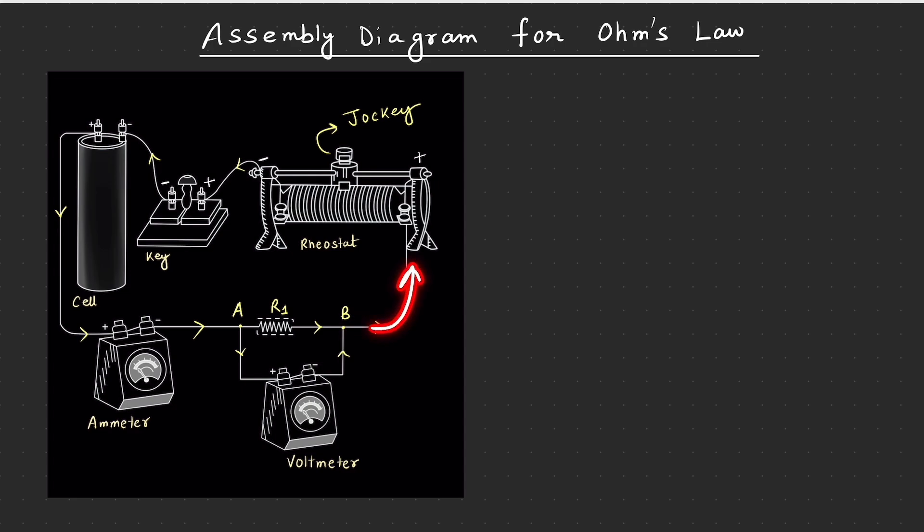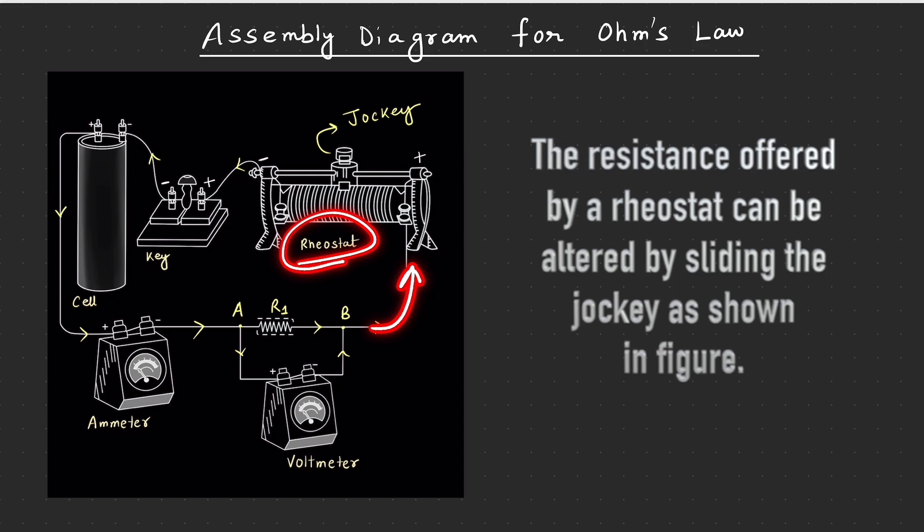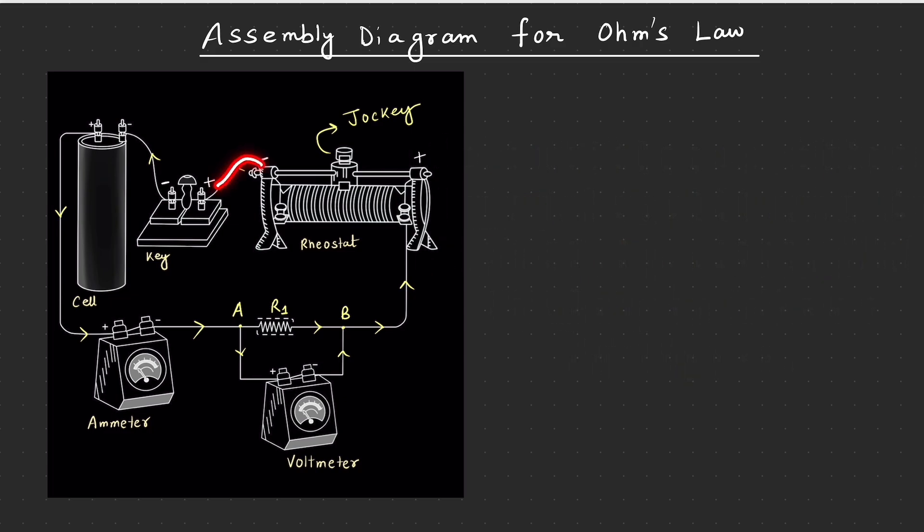So rheostat ka joh positive terminal hai, yahaan se current enter karega and then it will pass through the wires which are present inside the rheostat and then finally move out through the negative terminal. Last mein paunch raha hai into the switch or the key and switch ke negative terminal se yaha nikalega and paunchega to the negative terminal of the cell or the battery as applicable.